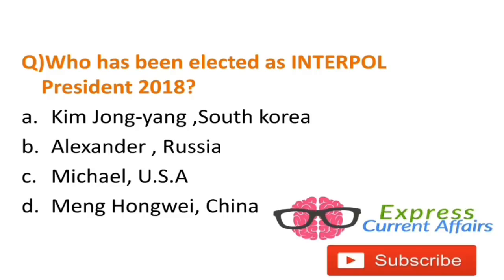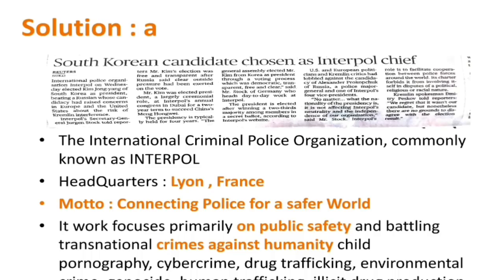Question: Who was elected as Interpol President 2018 — Kim Jong-yang of South Korea, Alexander of Russia, Michael of USA, or Meng Hongwei of China? The answer is A — Kim Jong-yang of South Korea. The international criminal police organization is commonly known as Interpol. Its headquarters is in Lyon, France. The motto of Interpol is 'Connecting police for a safer world.' It focuses on public safety and battling crimes including child pornography, cybercrime, drug trafficking, environmental crime, genocide, and human trafficking.